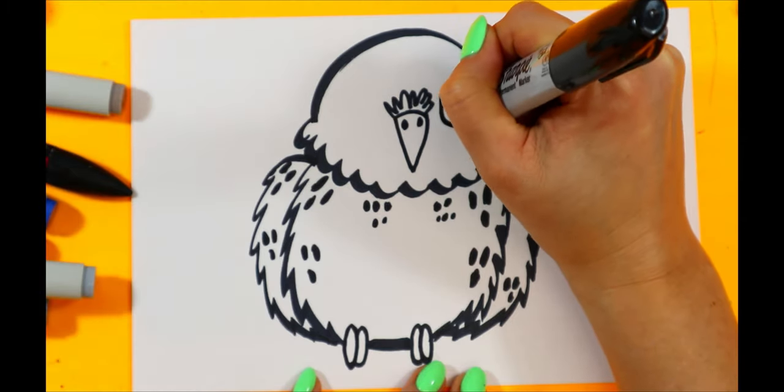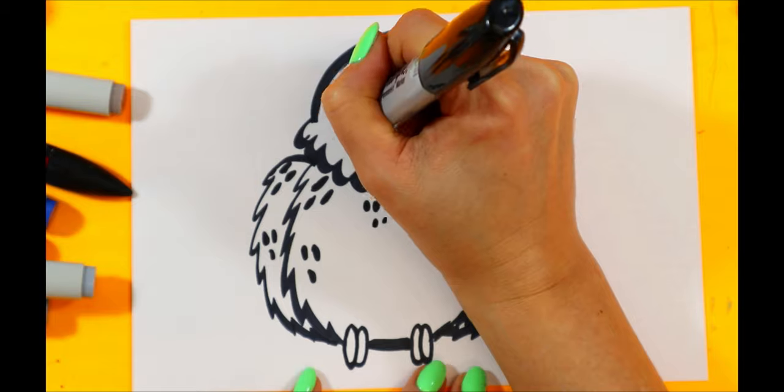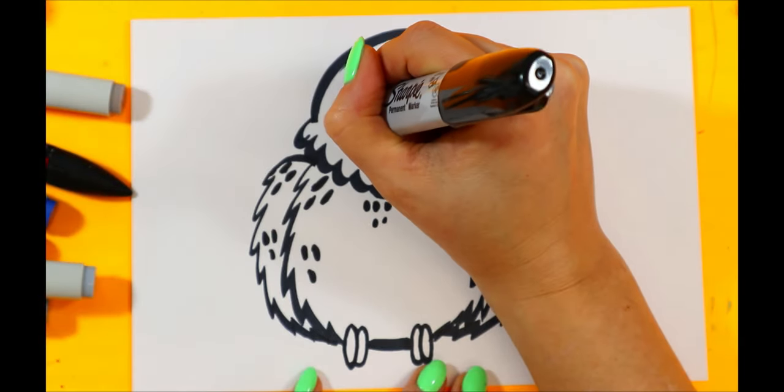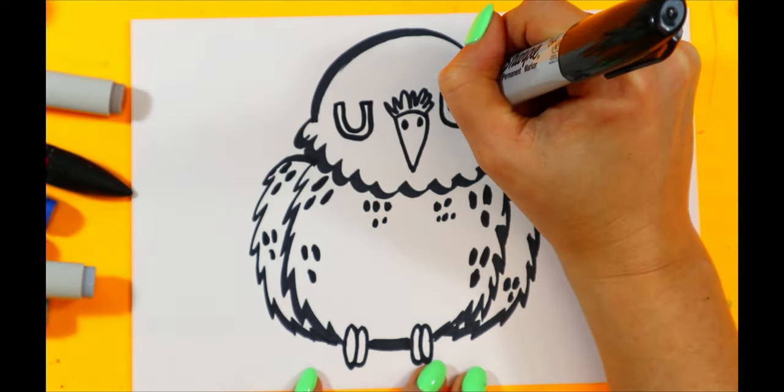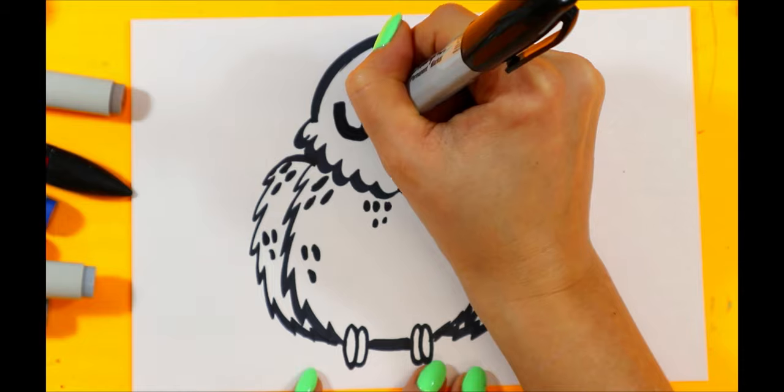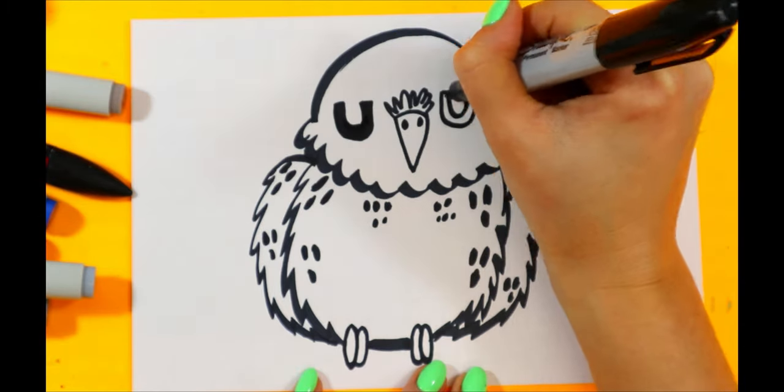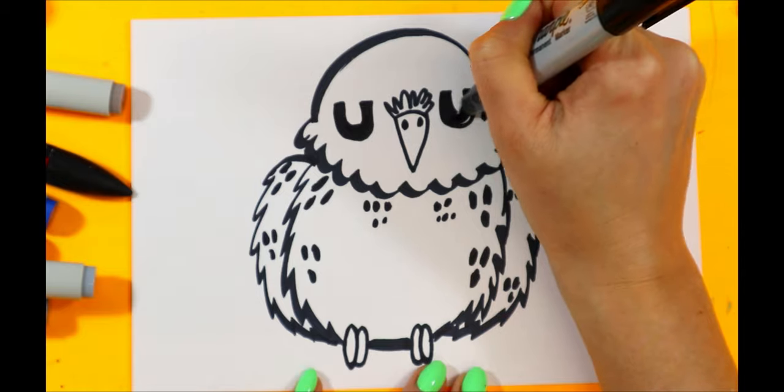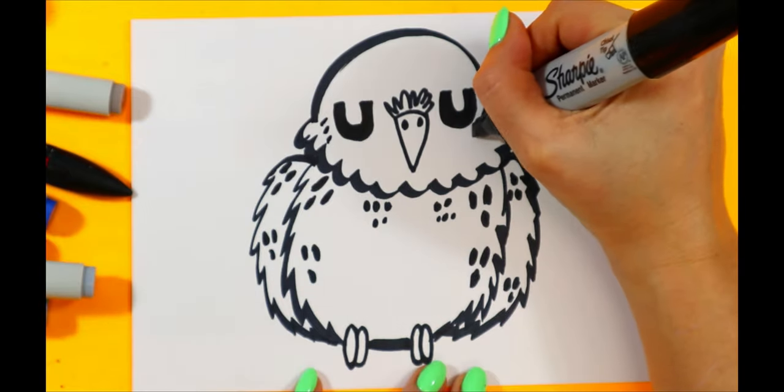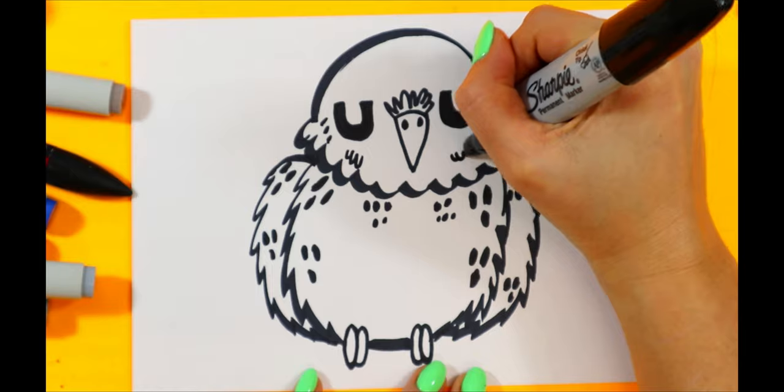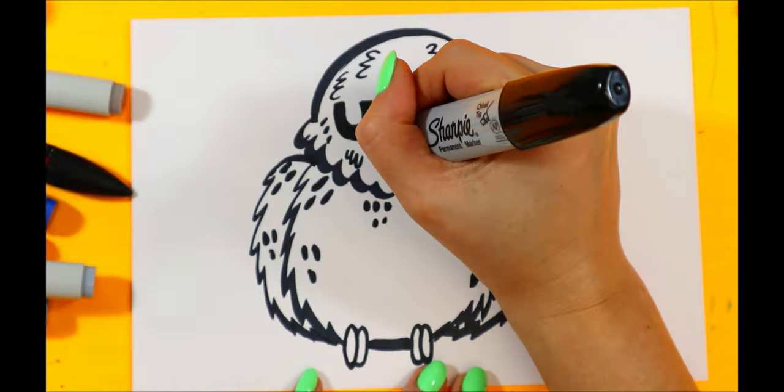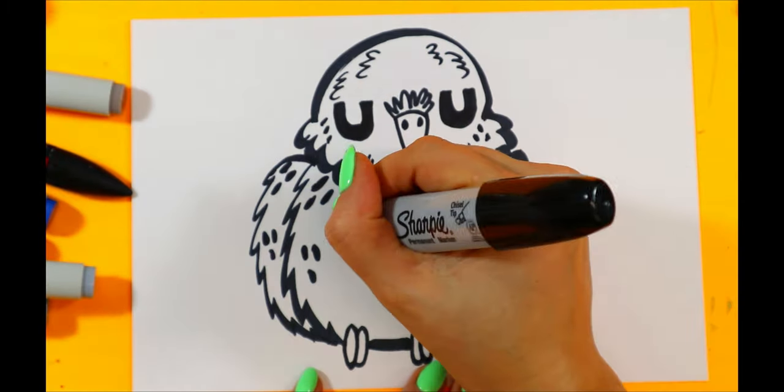We're going to have a little V below and then you can add your little nostrils. And then we're going to add eyes. Because it's sleepy, we're going to add two letter U's on either side of the eyes, and then we're going to thicken it up and make it like a bubble letter. And then you can color it in so it looks like it's sleepy. So cute! We're going to add a little feather details on the face and on the bottom.